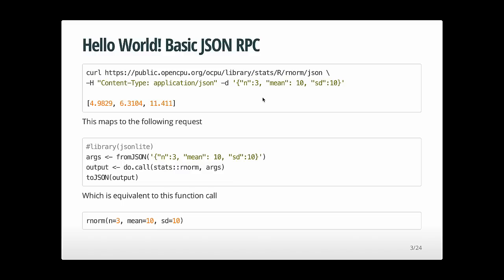If we run this in the console, it will call the rnorm function with these parameters, following the steps from the second block. It simply converts JSON into an R list, calls the rnorm function with those parameters, and then converts the output back to JSON, which in this simple example is equivalent to the call shown at the bottom.